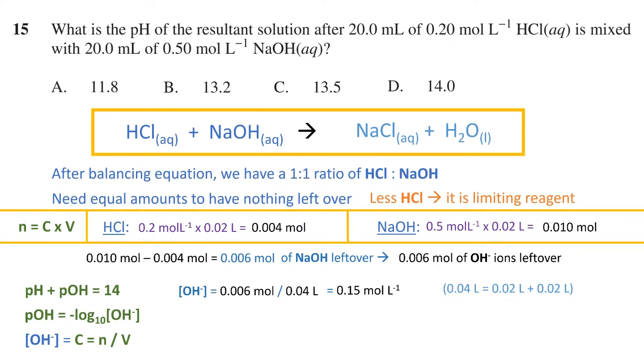The pOH calculation is just the negative log base 10 of this, giving us a pOH value of 0.824. Then, the pH is just 14 minus the pOH. Plugging in, we get 13.2 rounded to three significant figures, as in the question. Therefore, option B is the final answer.